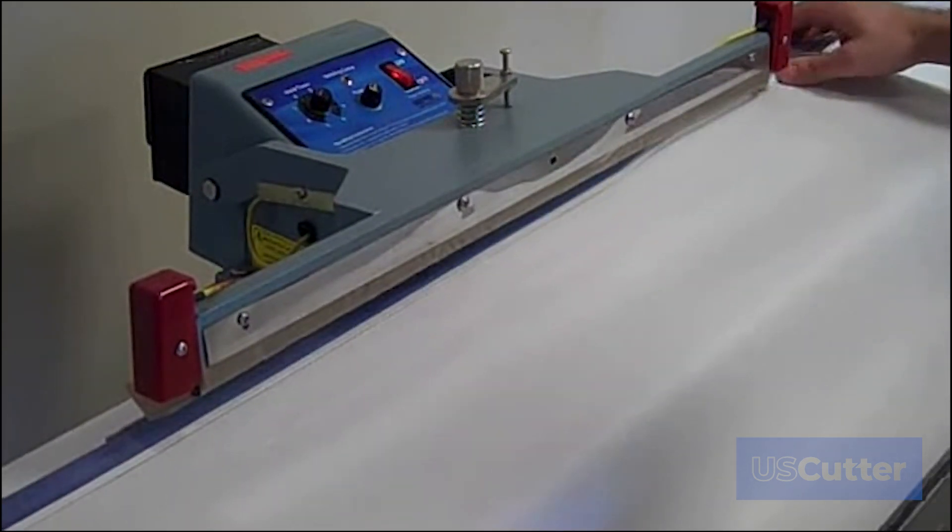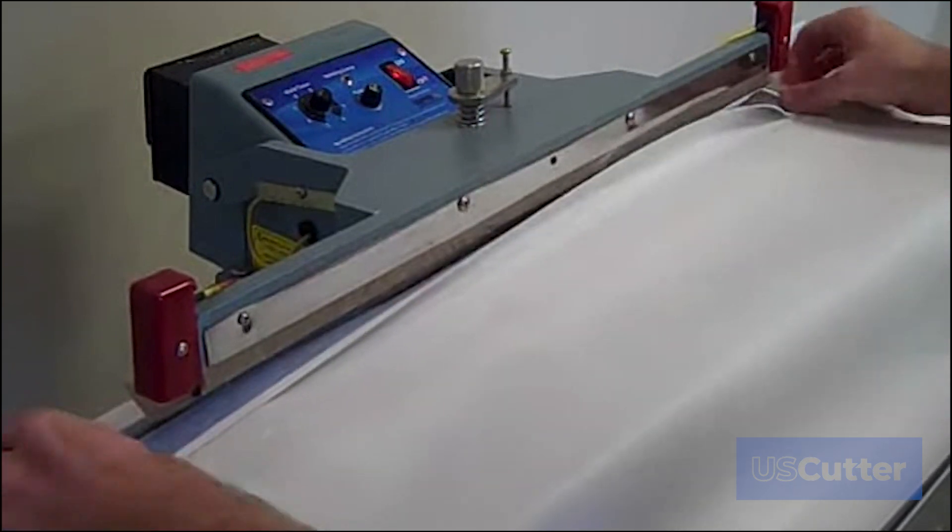After the weld is complete, slide the banner over and repeat the process until the entire side has been hemmed.